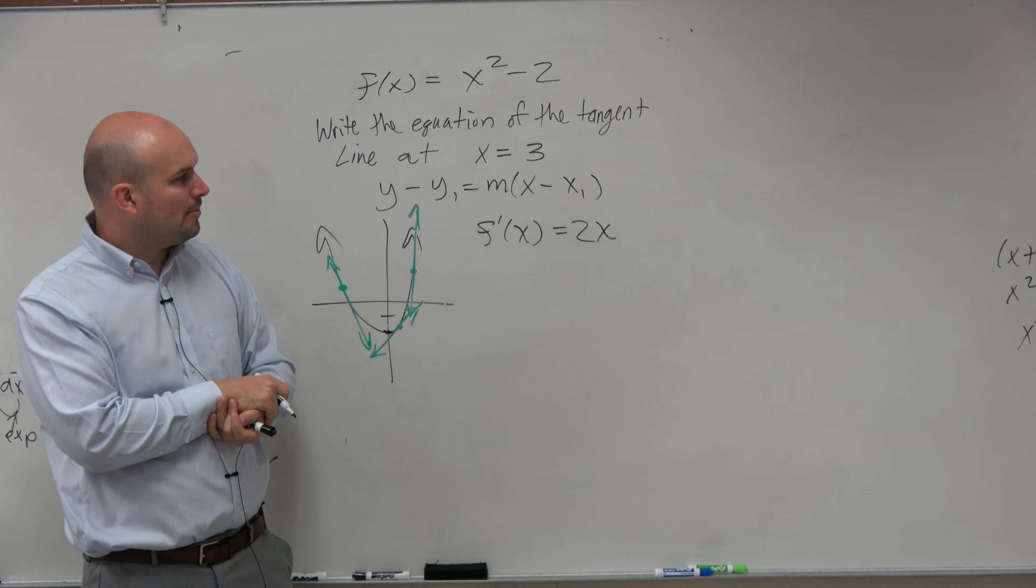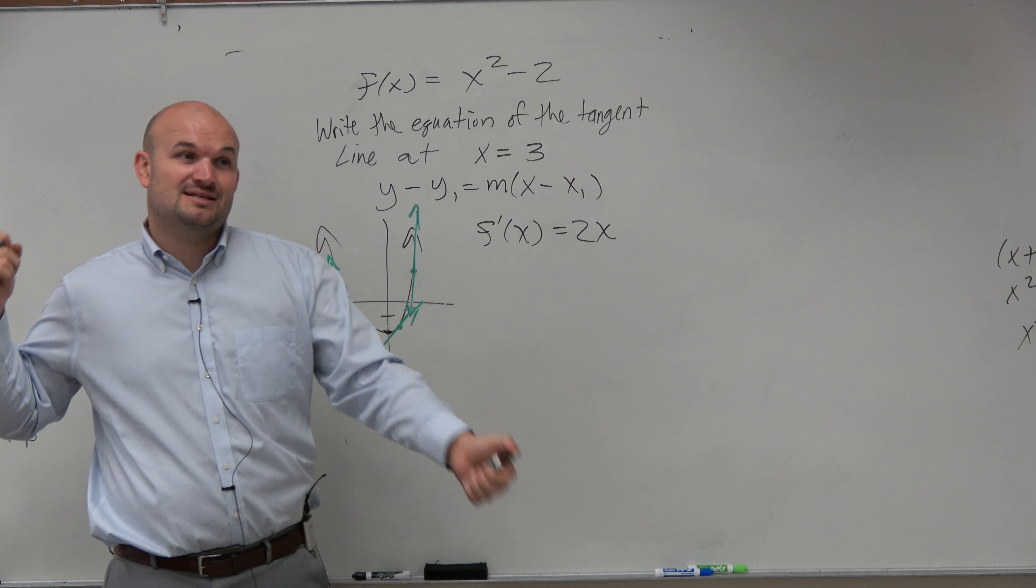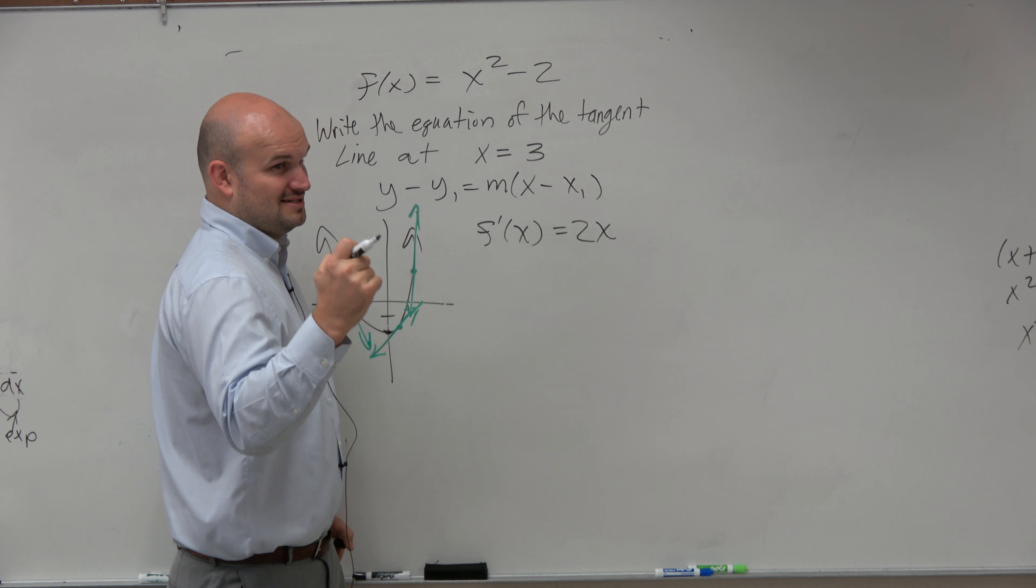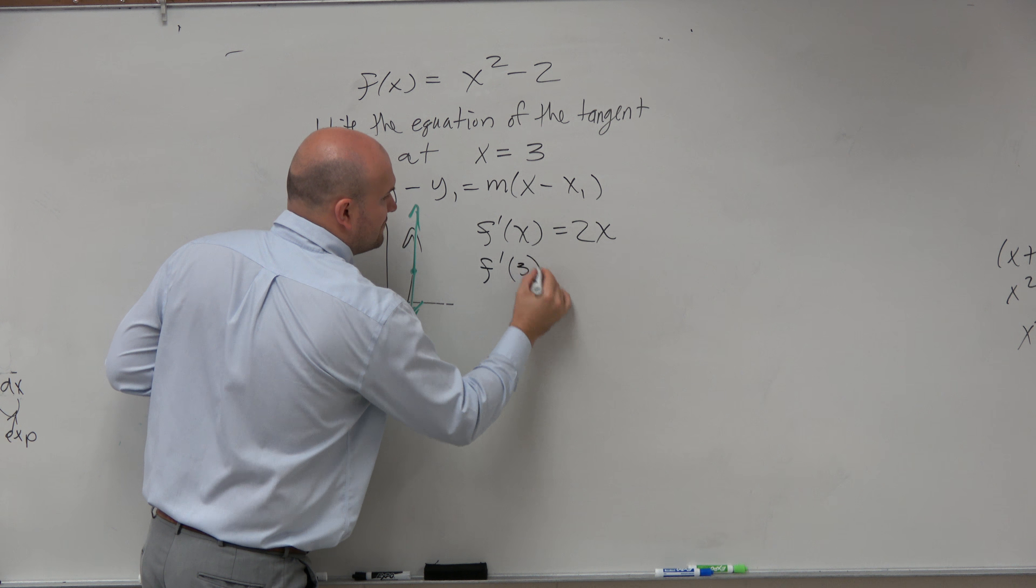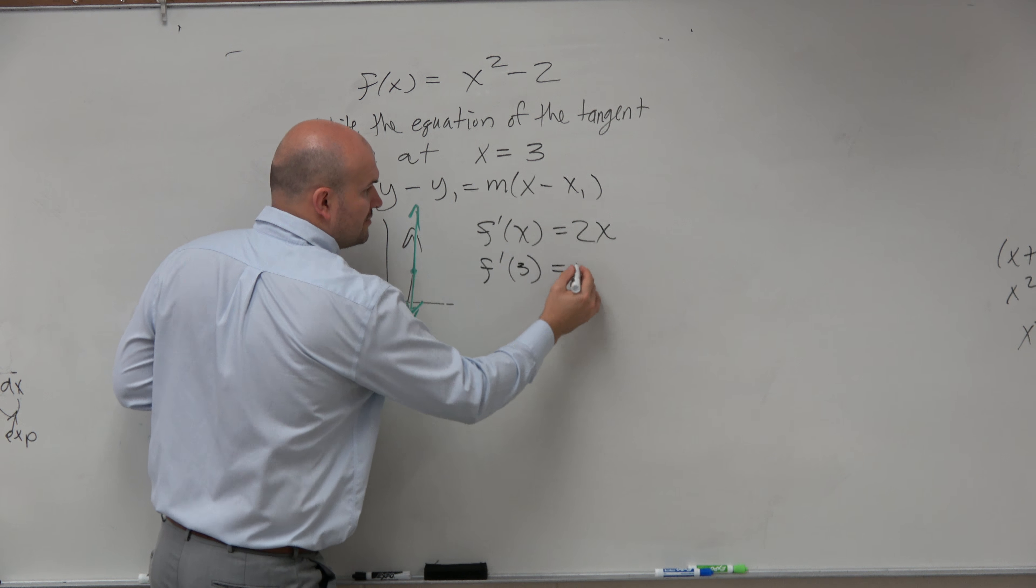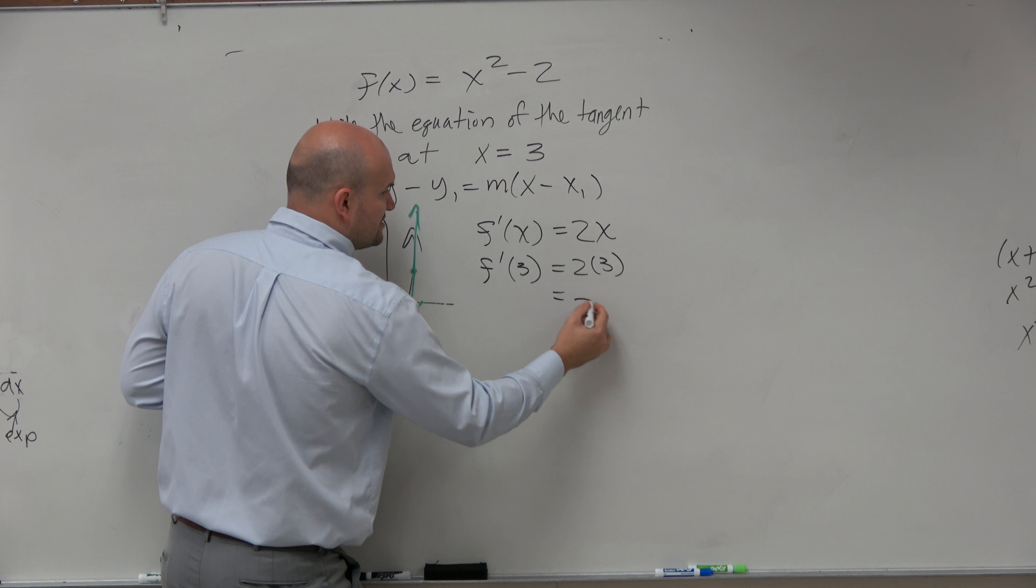That's the equation of the slope line. Now, we want to find the slope at what point? 3. So we're going to say f prime of 3 equals 2 times 3, so f prime of 3 equals 6.